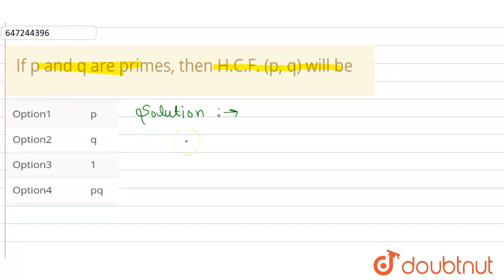First, let's write prime numbers. The prime numbers are 2, 3, 5, 7, and so on. Okay.